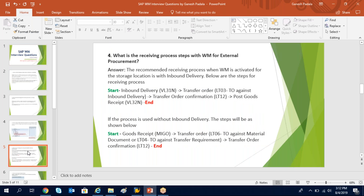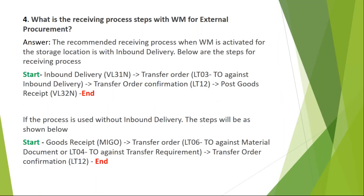When we use warehouse management, we generally recommend using inbound delivery. I'll give the answer covering two scenarios: with inbound delivery and without inbound delivery. When WM is active, we recommend inbound delivery because it lets you first receive the material and place it in the exact physical storage bin, and only after that do you post goods receipt in the system, which hits the accounting entries. Without inbound delivery, you do the IM transaction first and then warehouse management.